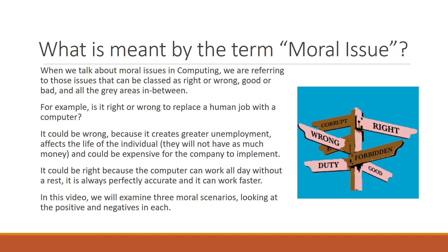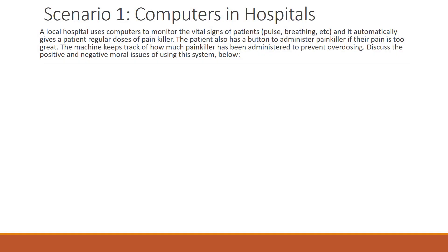In this video, we will examine three moral scenarios, looking at the positives and negatives of each. In scenario one, we are looking at computers in hospitals. The scenario suggests a local hospital uses computers to monitor the vital signs of patients — pulse, breathing, etc. — and it automatically gives a patient a regular dose of painkiller. The patient also has a button to administer painkiller if their pain is too great. The machine keeps track of how much painkiller has been administered to prevent overdosing. The aim is to discuss the positive and negative moral issues of using this system.